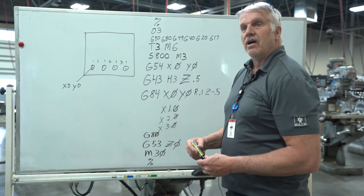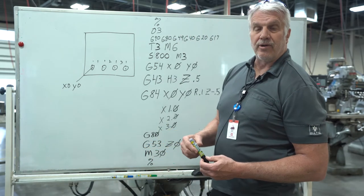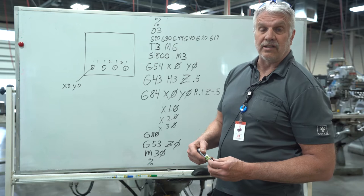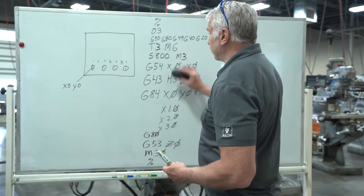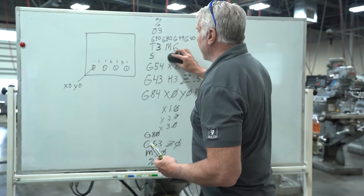Now reamers usually go half to a third of the speed of what a drill does. So there's some differences on spindle speeds. You need to kind of keep that in mind.